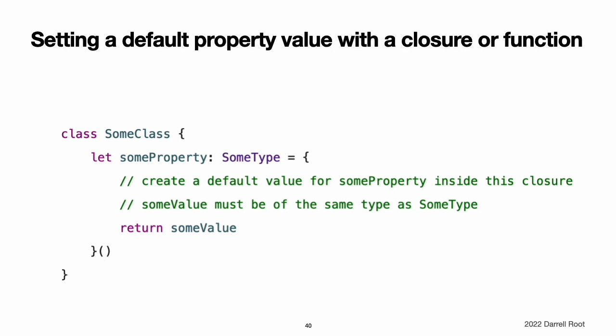Note: if you use a closure to initialize a property, remember that the rest of the instance has not yet been initialized at the point that the closure is executed. This means that you cannot access any other property values from within your closure, even if those properties have default values. You also cannot use the implicit self property or call any of the instance's methods.